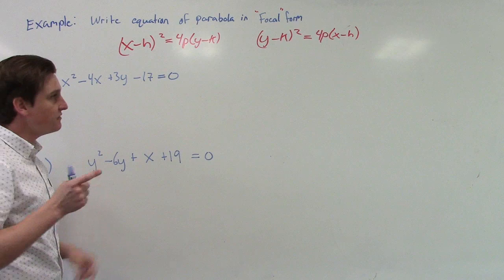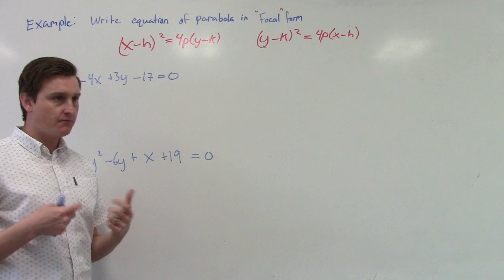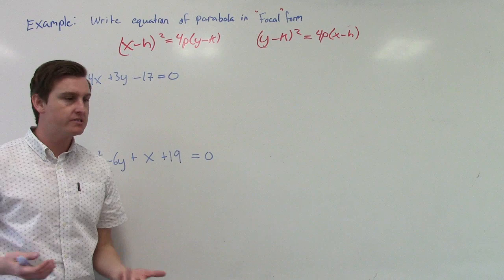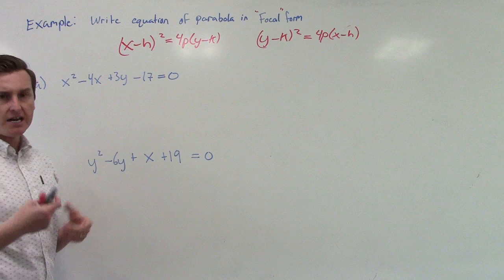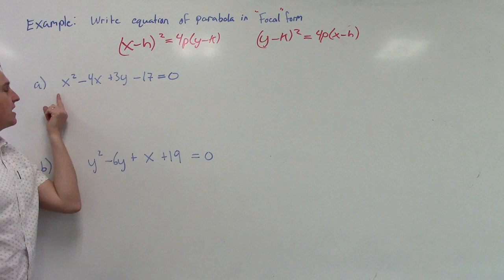This is what we're working with, and we're going to do something very similar to what we did in a previous video. In the first video for this lesson, I reviewed how to write an equation in standard form — the standard equation of a circle — given an equation, and we used a completing the square strategy. This time we're not doing circles, we're doing parabolas, but the strategy is going to be the same. The goal is to get the equation to look like focal form.